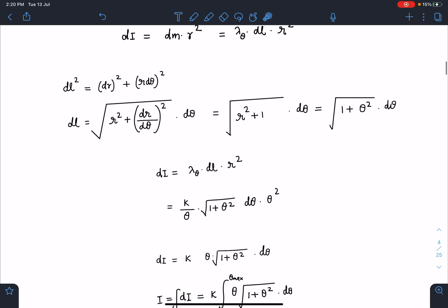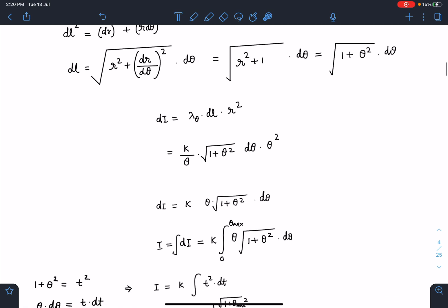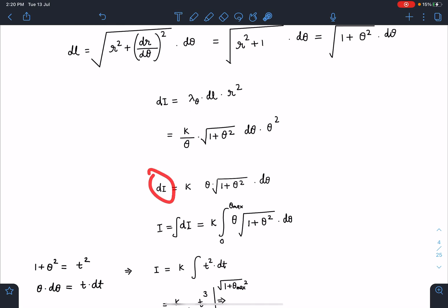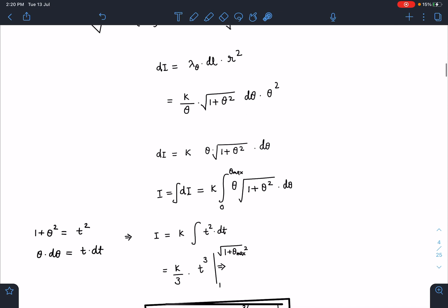Let's substitute all these values. λ_θ is k/θ, dl is √(1 + θ²)·dθ, and one more θ² will come outside. So you can check: dI is k times θ·√(1 + θ²)·dθ. Now I hope you have understood why I have kept linear mass density as k/θ, because it will make it solvable and it will become a relatively easy integral. Zero to θ_max is going to be the limit. If they ask for one turn, zero to 2π; two turns, zero to 4π. So I have just taken for general θ_max.